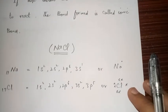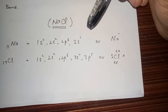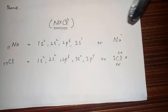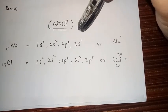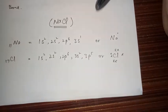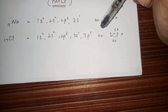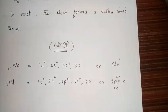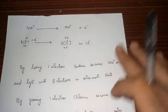Let's see an example: NaCl. Sodium (Na) has 11 total electrons and one electron in its valence shell. On the other hand, chlorine has seven electrons in its valence shell and 17 total electrons in its orbitals.